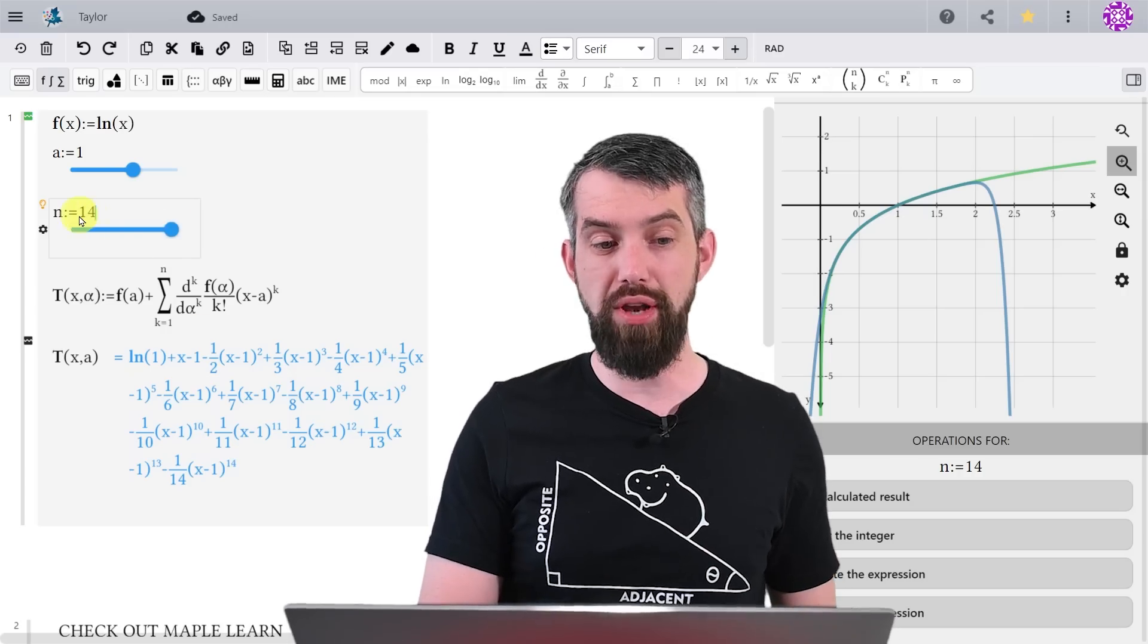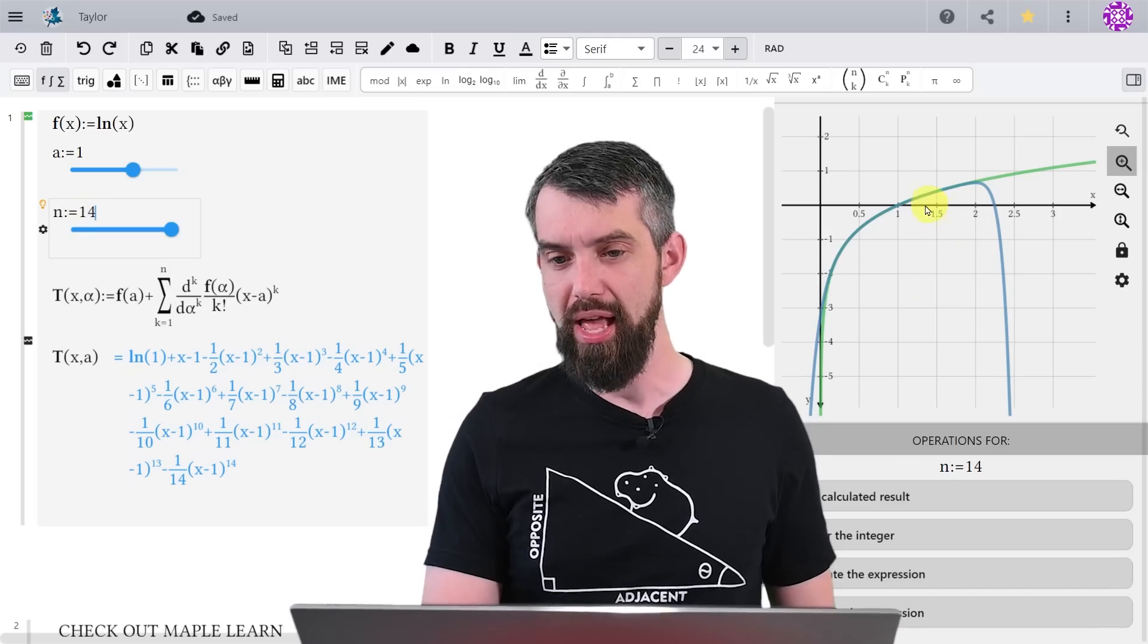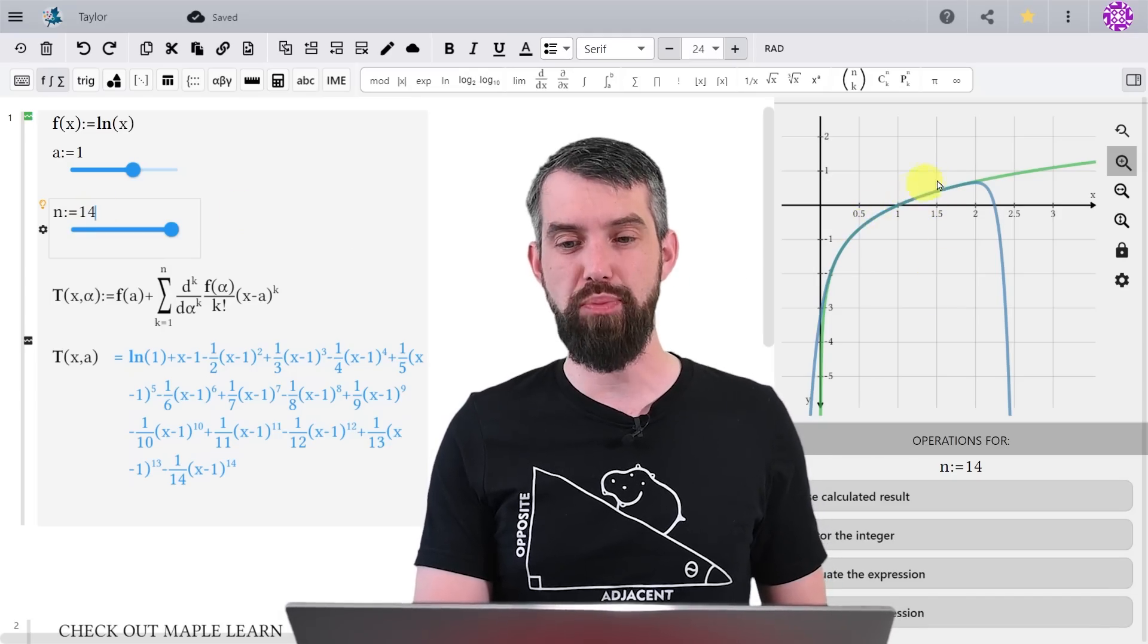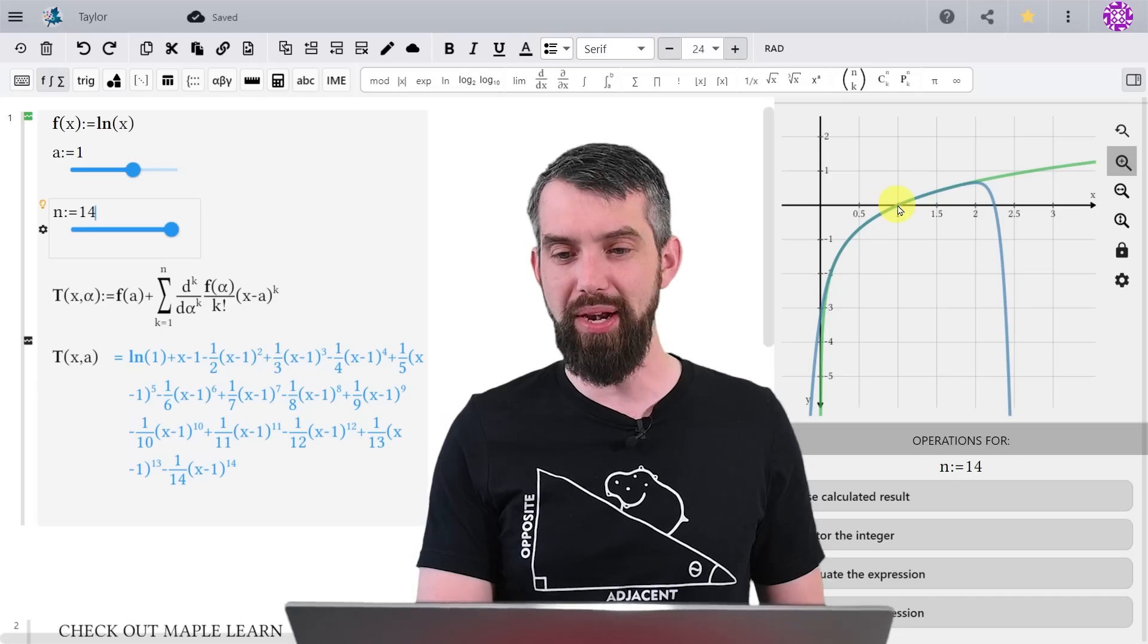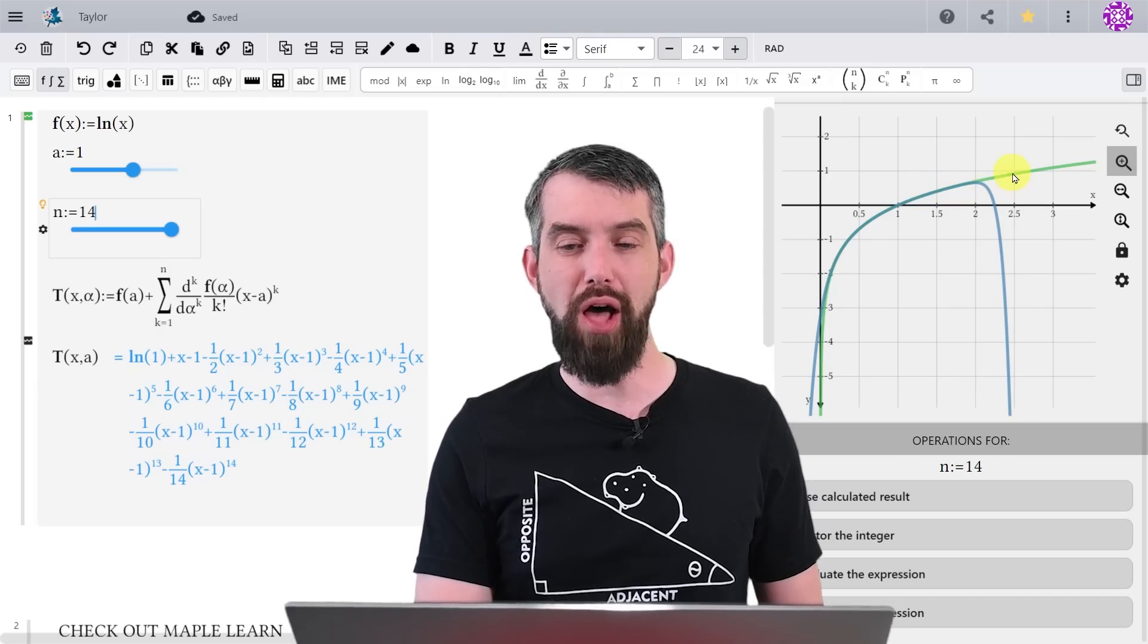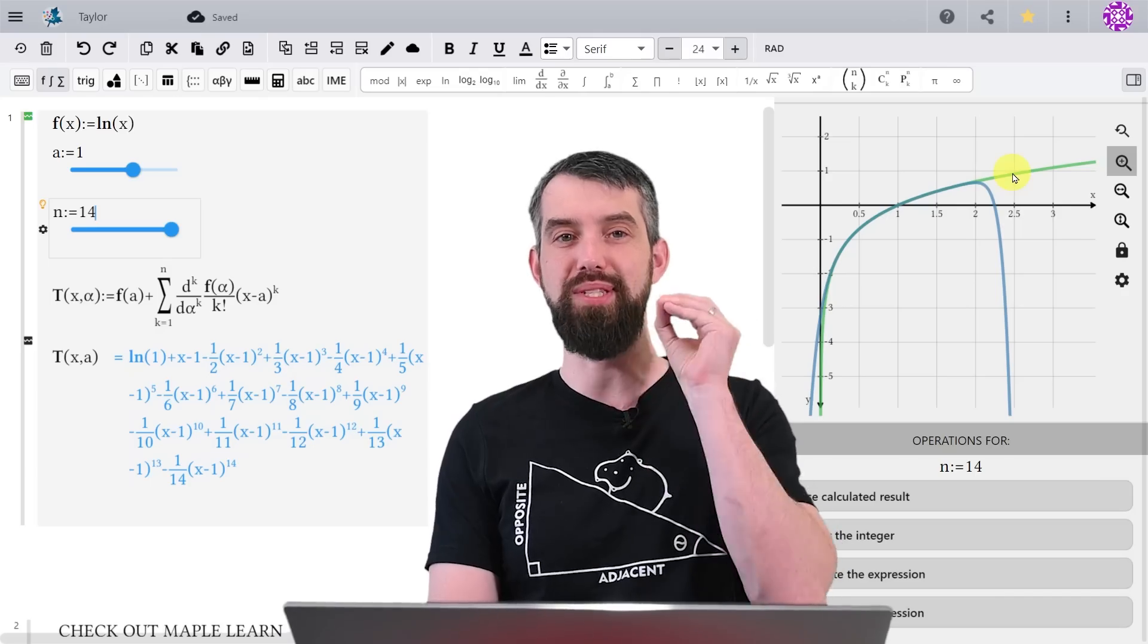Now, what I want to note is that even though I've gone to 14 terms here, that this is a very good, visually at least, looking approximation, sort of around 1. But as soon as I get to the value of 2, it just drops off, and the approximation becomes terrible.